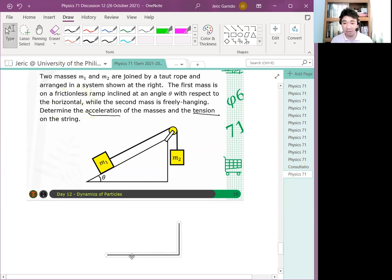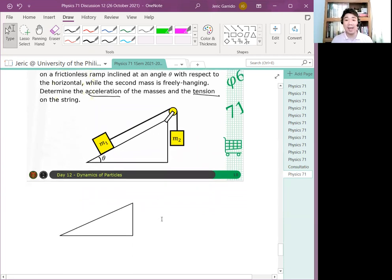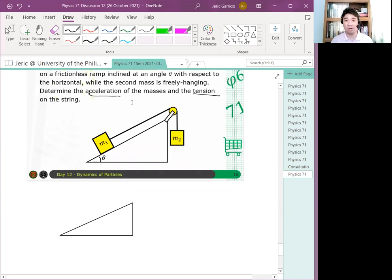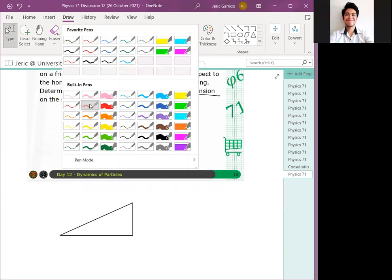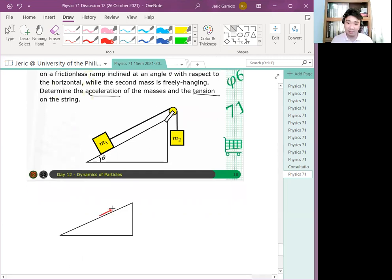The free body diagram of the first object, or M1 I should say, is like this. So I'll draw an incline. What are the forces acting on M1? You have tension in this direction here. The tension is parallel to the incline, so let's assume they are parallel. And the normal force here.